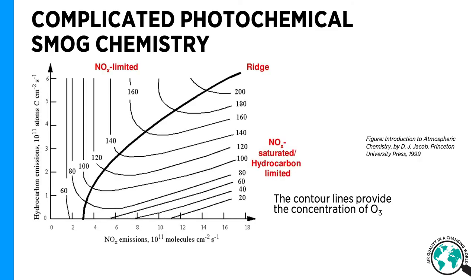The chemistry of photochemical smog is rather complicated and much more complicated than London-type smog, which is also one of the reasons why it is difficult to prevent. The figure on the slide depicts the dependency of the concentration of ozone on the emissions of hydrocarbons and NOx. On the x-axis we have the emissions of NOx, on the y-axis the emissions of hydrocarbons, and the contour lines provide the concentration of ozone in units of parts per billion.